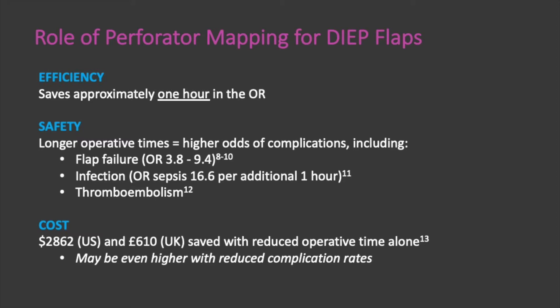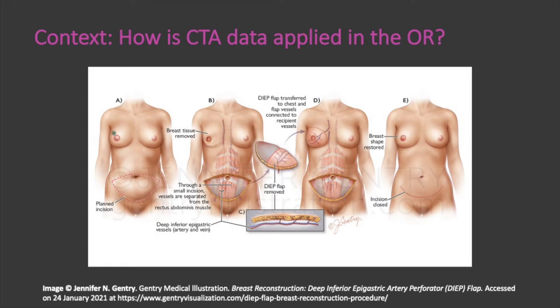Now let's dive into perforator mapping. To provide a bit of context, how is the CTA data applied in the OR? Your patient has completed their preoperative imaging and has arrived in the operative suite. The preoperative plan formulated from CTA can be used to mark perforators on the patient's abdomen, with location of vessels confirmed by a handheld Doppler. Intraoperatively, knowledge of the intramuscular course of the perforator will aid in dissection, reduce error, and shorten the operative time.